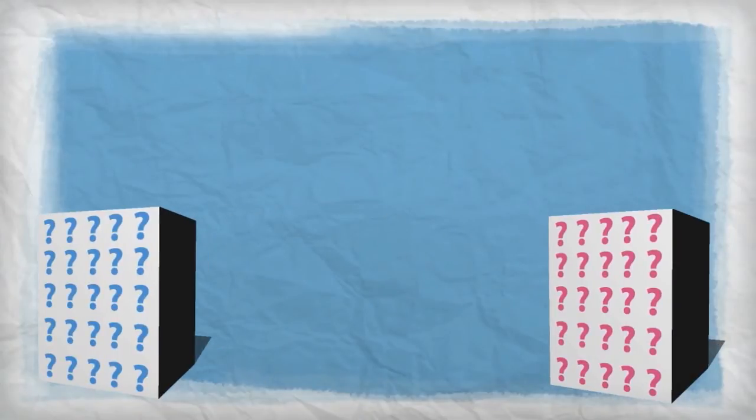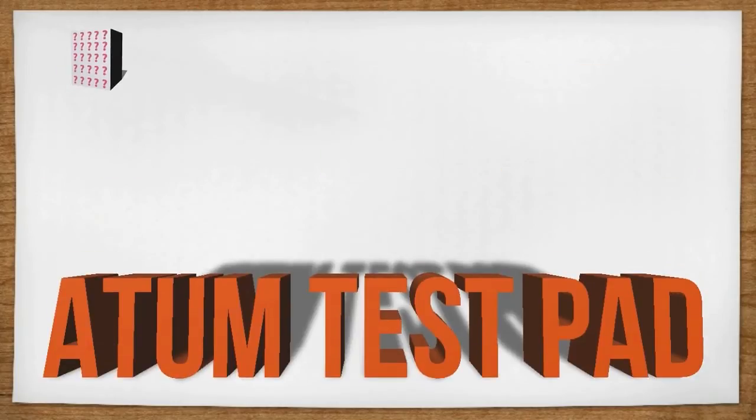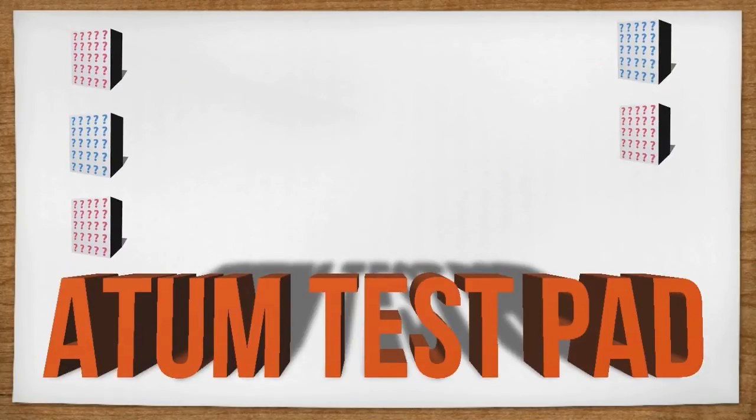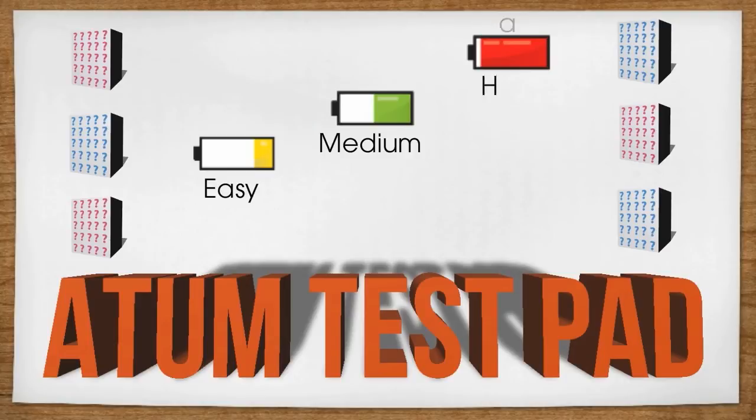After creating his question banks, Henry went on to create a question paper to test his candidates on. Atom Testpad not only allowed Henry to connect as many banks as he wants to power his question paper but also allowed him to select the difficulty level of questions to be included in the question paper.